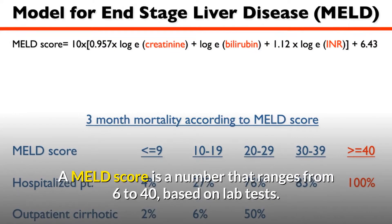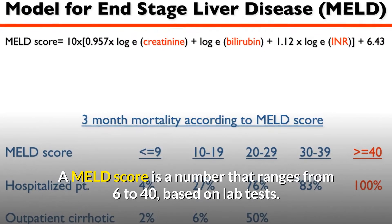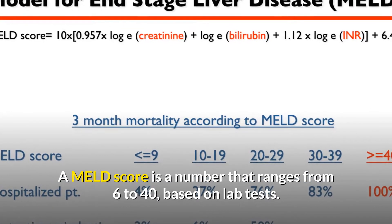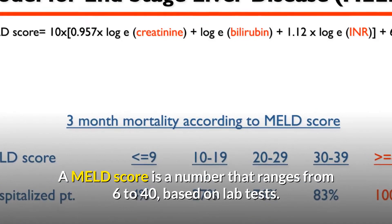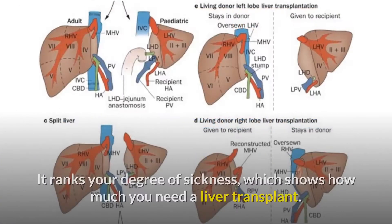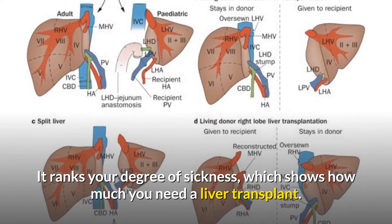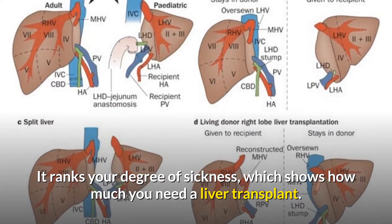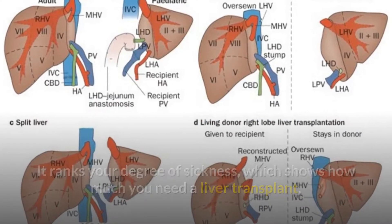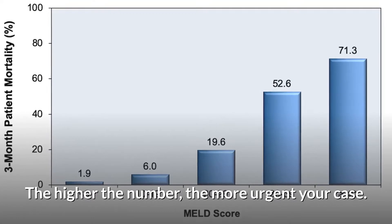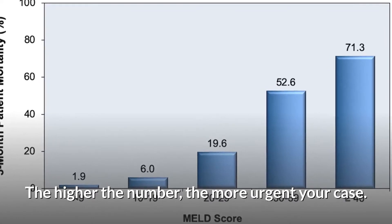A MELD score is a number that ranges from 6 to 40, based on lab tests. It ranks your degree of sickness, which shows how much you need a liver transplant. The higher the number, the more urgent your case.